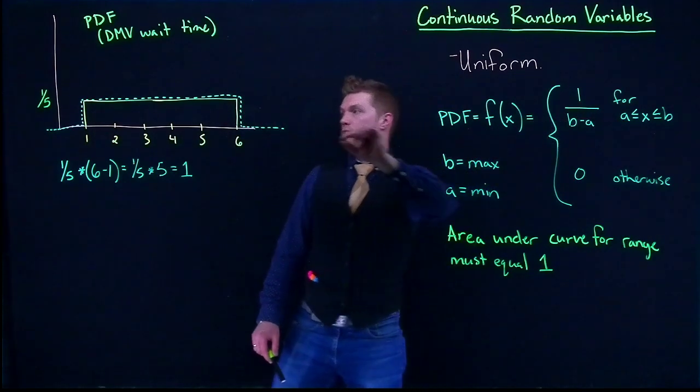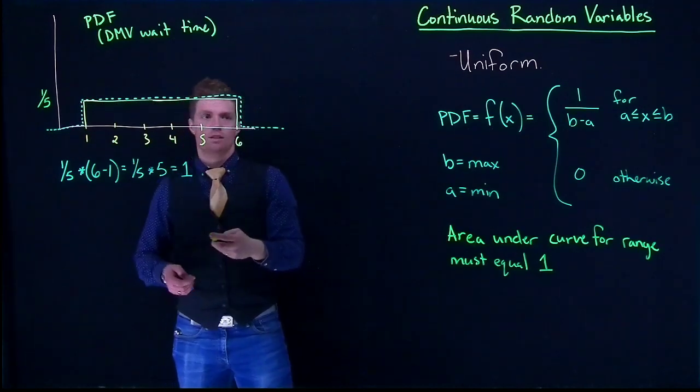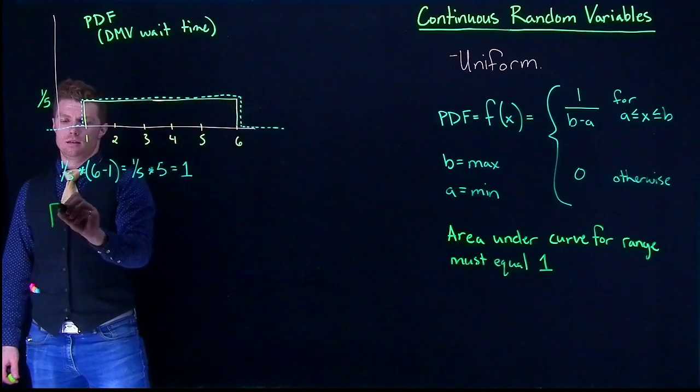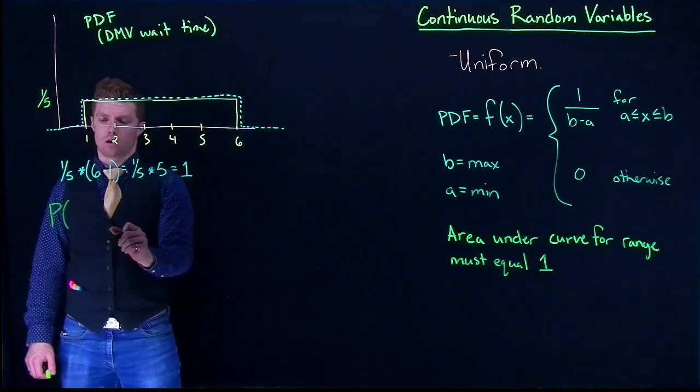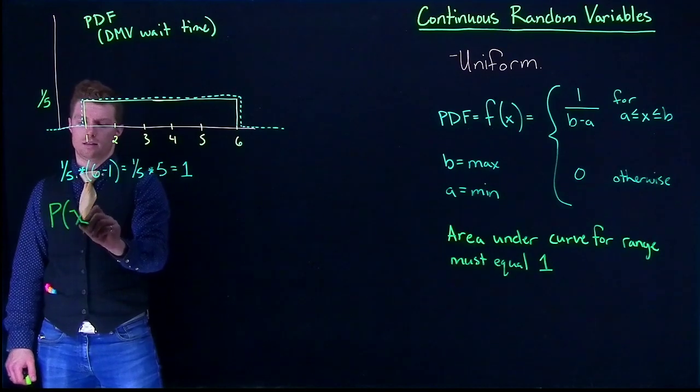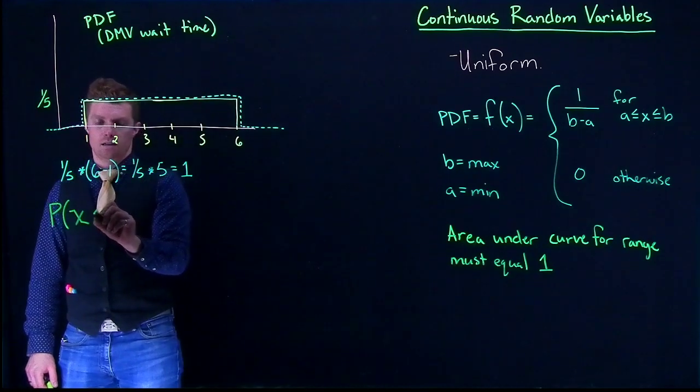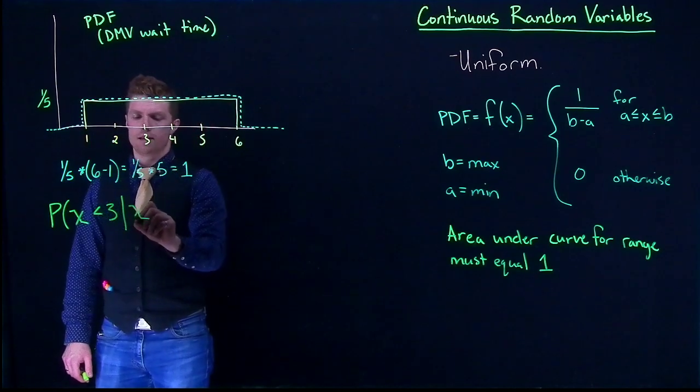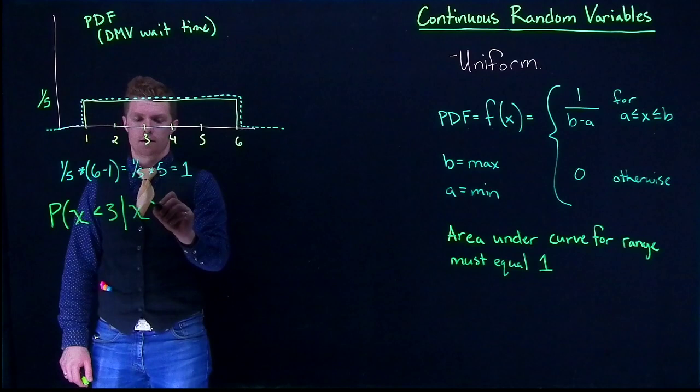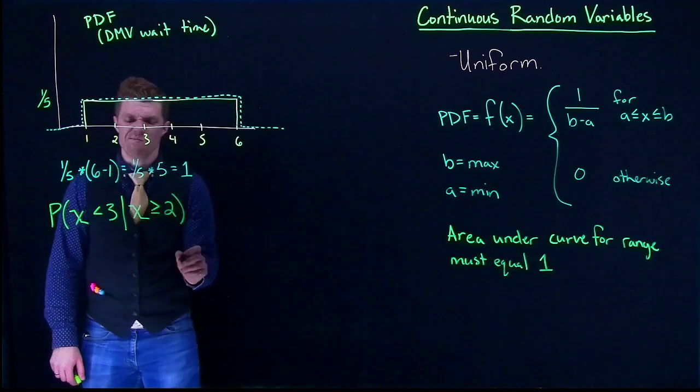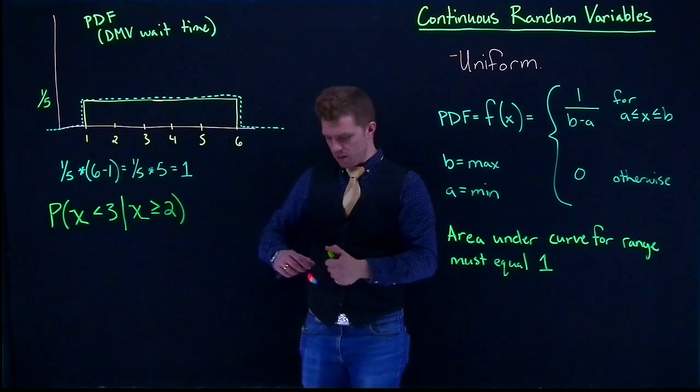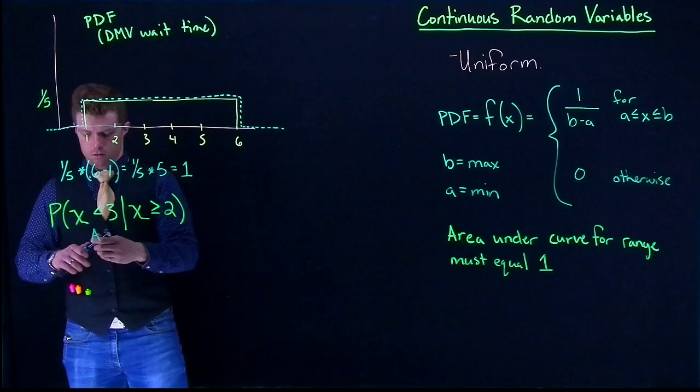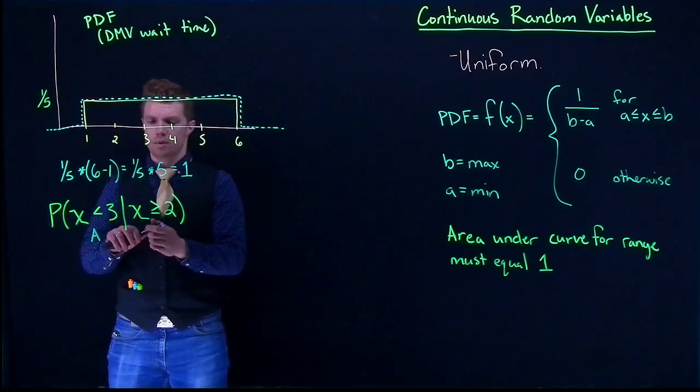With this guy, now that we know what the height is, we can do all sorts of probabilities. Let's maybe do a conditional probability just for the heck of it. What is the probability that our outcome is going to be less than 3, given that our wait time is greater than or equal to 2. So we have event A and event B. I'm going to label these guys. We'll label event A as blue and we'll label event B as pink.